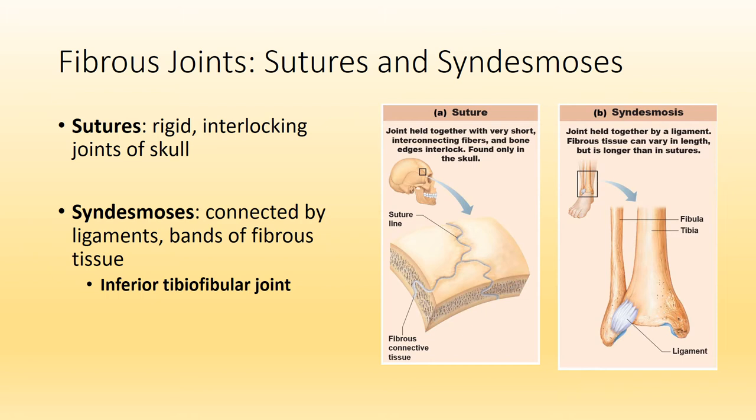Another type of fibrous joint is known as a syndesmosis. The best example is the inferior tibiofibular joint. Often the name of a joint will tell you what bones are coming together to create it. In this case, the joint is found at the distal or inferior end and it connects the tibia to the fibula — the bones of the leg.